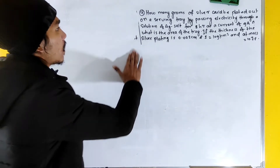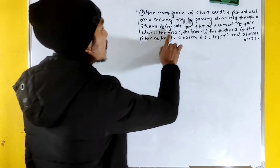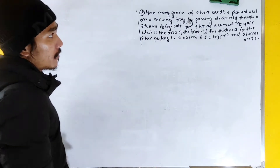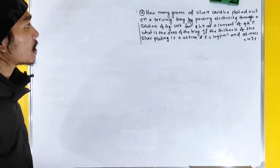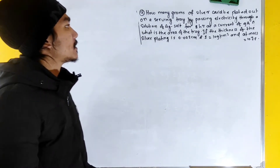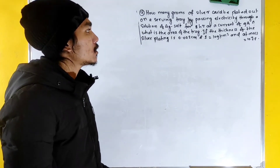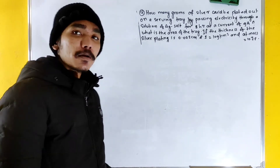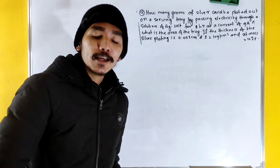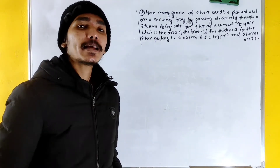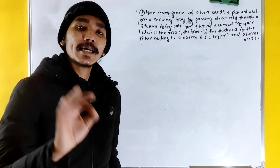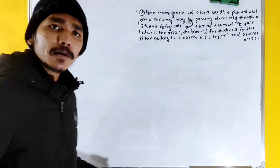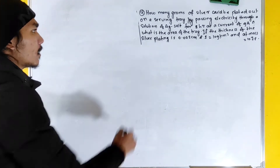What is the area of the tray, if the thickness of the silver plating is 0.002 cm? Density and atomic mass are also given.